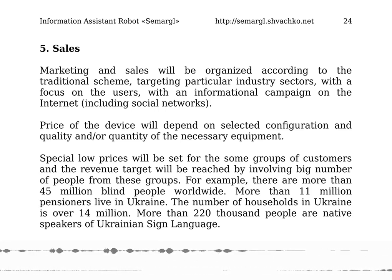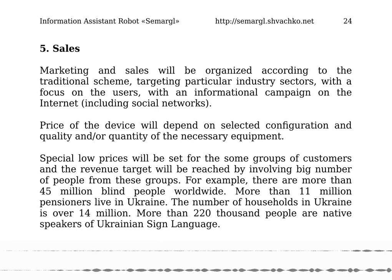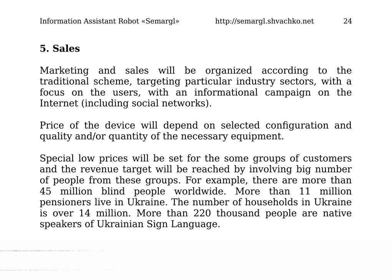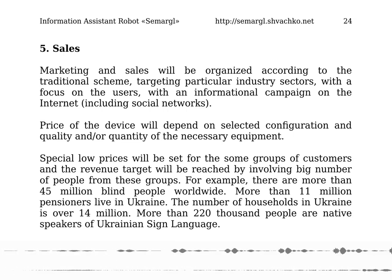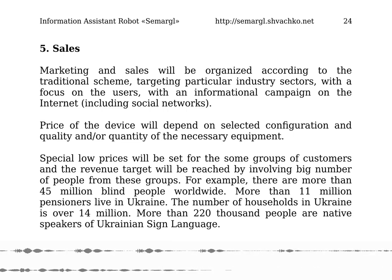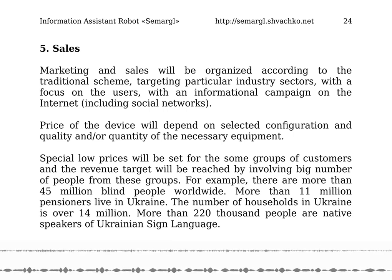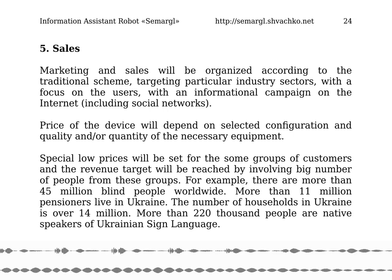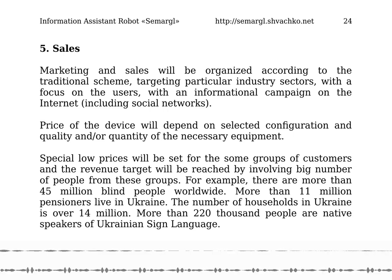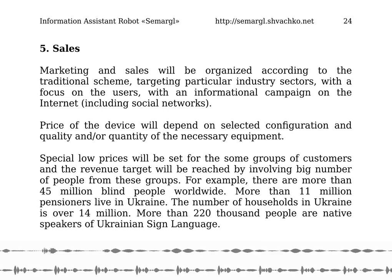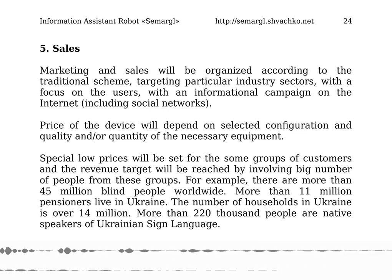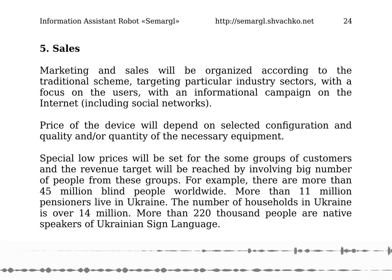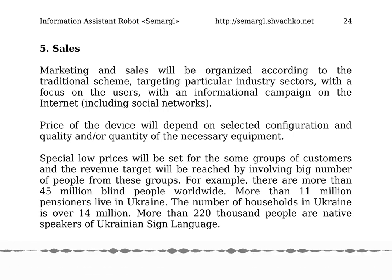Marketing and sales will be organized according to the traditional scheme, targeting particular industry sectors with a focus on users, with an informational campaign on the internet including social networks. The price of the device will depend on the selected configuration and quality and/or quantity of the necessary equipment. Special low prices will be set for certain groups of customers. For example, there are more than 45 million blind people worldwide, more than 11 million pensioners live in Ukraine, the number of households in Ukraine is over 14 million, and more than 220,000 people are native speakers of Ukrainian Sign Language.